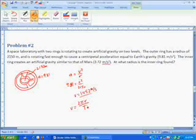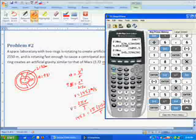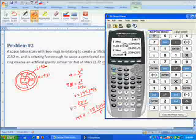145.2 is equal to 2 pi r, which is 2150, over the period. So let's solve for t. We'll multiply by t divided by 145. So we'll go 2 pi, 2150, divided by 145.2.